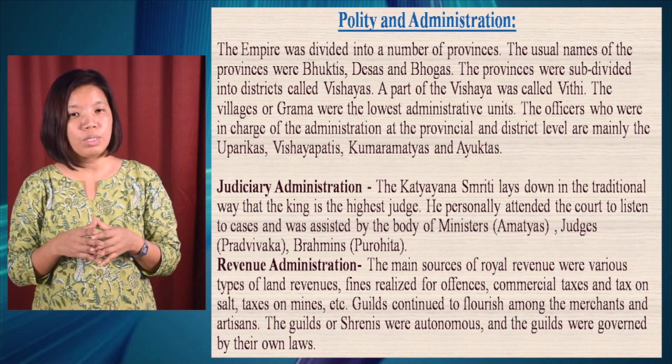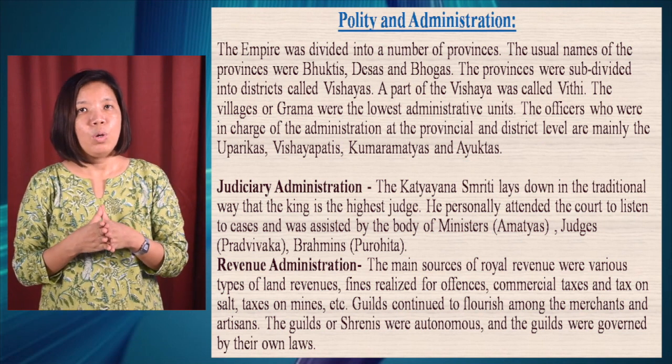Land revenue was the main source of income for the state, emerging from the grant of lands during the Gupta period. This land grant policy was also one of the reasons for which the Gupta Empire had to meet its downfall. We now move on to the topic of the downfall of the Guptas.